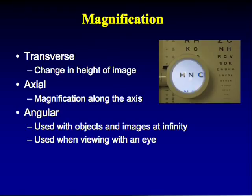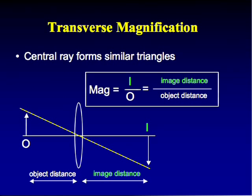There are three types of magnification. Transverse magnification is a change in the height of the image. Axial magnification is along the axis, in depth. Angular magnification applies when viewing something with an eye or using a telescope or loops. Transverse magnification brings us back to our u plus d equals v diagram from earlier.